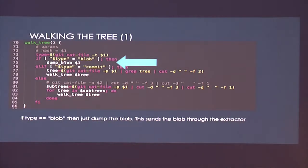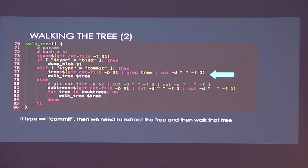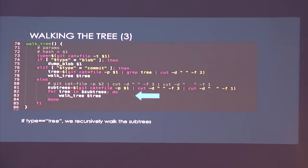Let's look at some Grawler source code. This is the walk_tree function — a recursive function that basically uses git cat-file dash t. If it finds a blob, it's going to dump the blob, which sends it to the extractor. If it's a commit, we look for a line that says 'tree' in it, cut out the hash, and walk the tree with that hash. Otherwise it's going to be a tree with a bunch of other hashes, so we cut those hashes out and walk those.